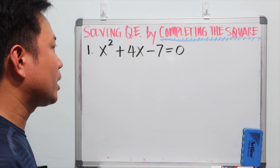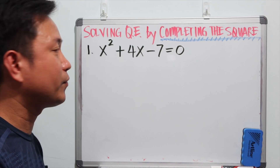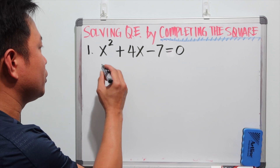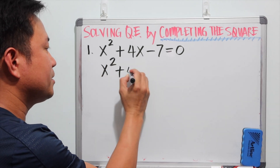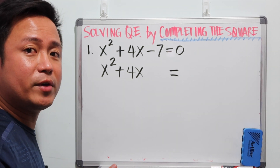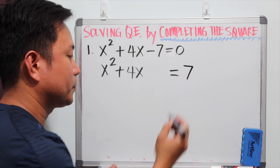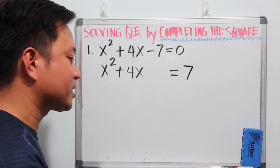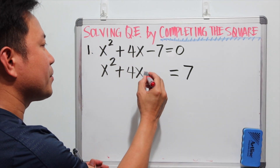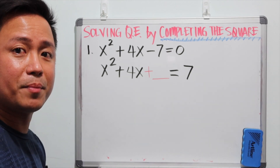By completing the square, we can solve for the zeros or the x-intercepts of a quadratic function. The first step is to isolate the variables on the left side. The constant, negative 7, is moved to the right side, which becomes positive 7. This method is called completing the square because we need to add something here to make it a perfect square, or a PST.